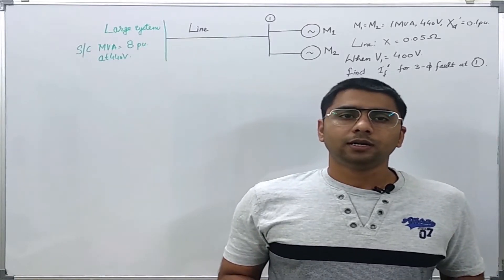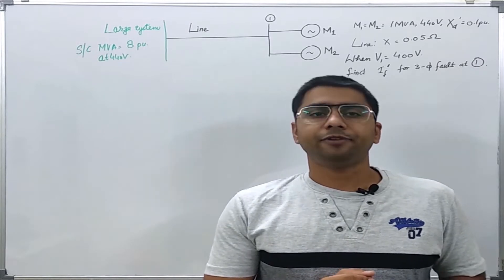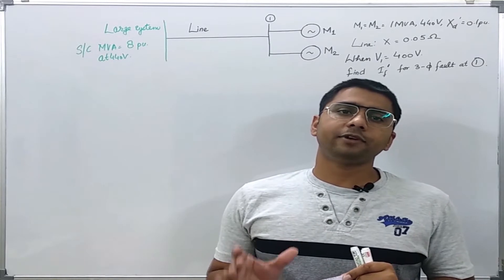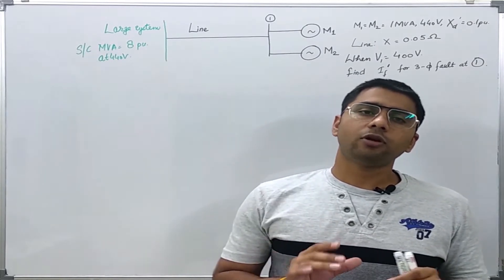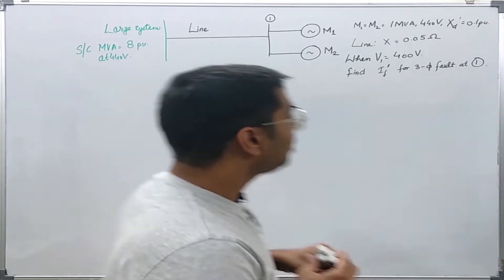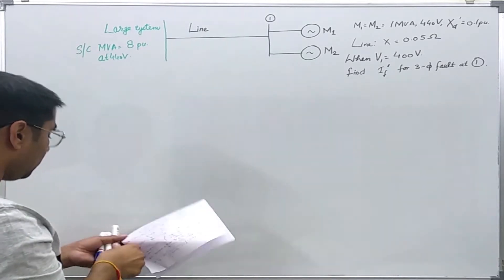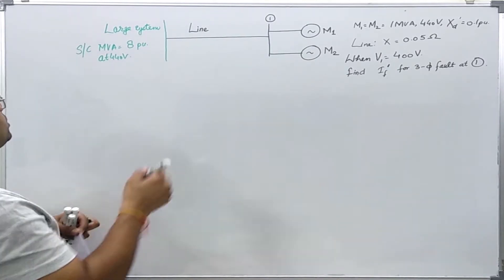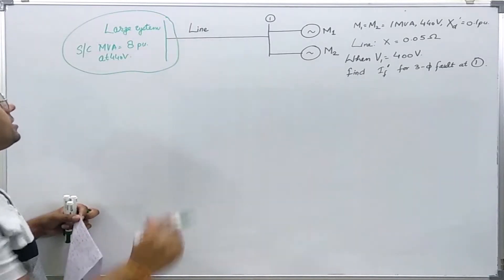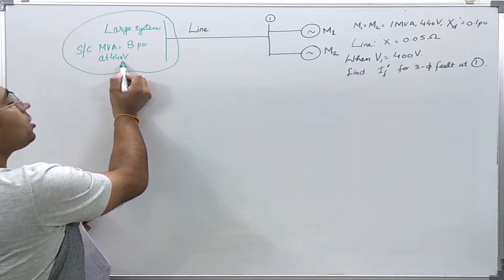Let us see a numerical example which includes the concept of short circuit MVA. This example will show us that the short circuit MVA concept is very useful in fault calculation. We are given that there is a very large power system having a short circuit MVA of 8 per unit at a 440 volt base.